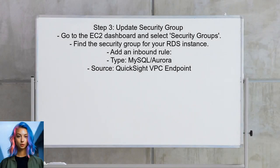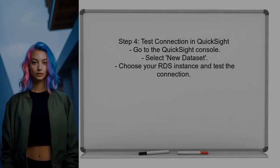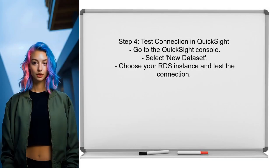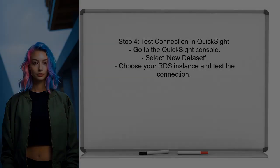After creating the VPC endpoint, update the security group associated with the RDS instance. This involves adding an inbound rule that allows traffic from the QuickSight VPC endpoint. Finally, test the connection in QuickSight by navigating to the QuickSight console, selecting New Dataset, and choosing the RDS instance to see if the connection is successful.